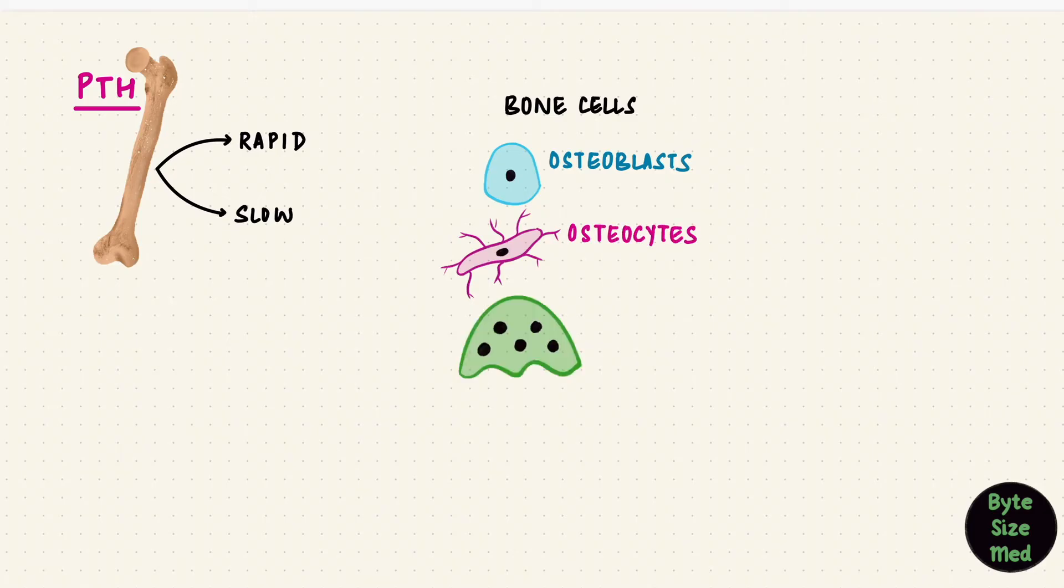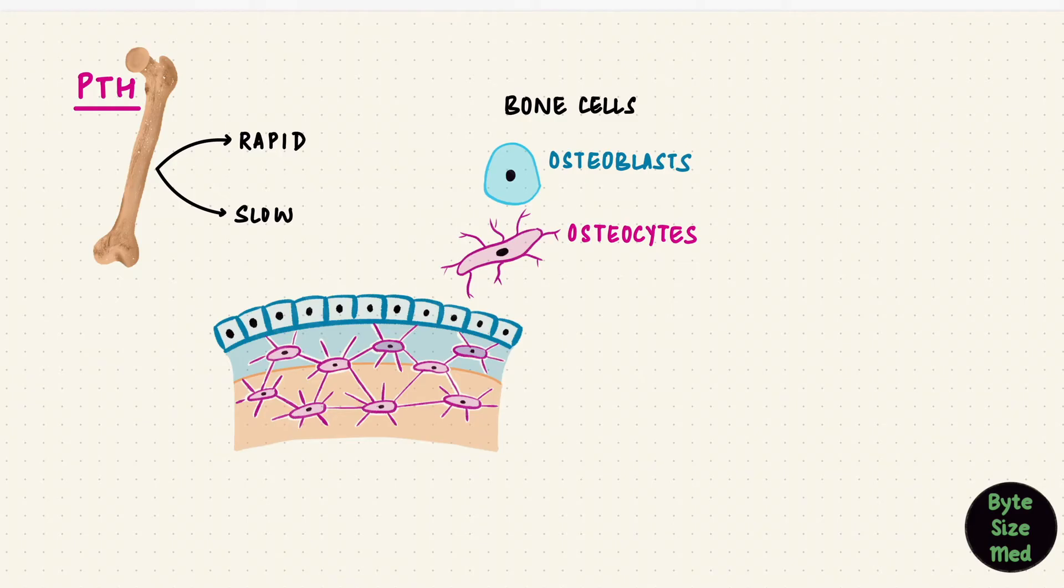Bone too has receptors for the parathyroid hormone. In bone, PTH can act rapidly or slowly. Bone has cells: osteoblasts, osteocytes, and osteoclasts. Osteoblasts are bone forming cells. Osteoclasts destroy bone matrix. And osteocytes are trapped osteoblasts in the bone matrix with cytoplasmic extensions sitting in canaliculi. The osteocytes are connected to each other and the osteoblasts by gap junctions. Gap junctions allow ions to move between the cells.